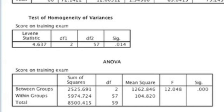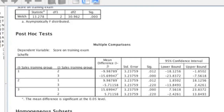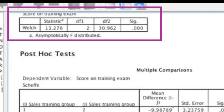Thinking back to the assumption of equality of variance — it was not met, so we need to apply a Welch correction. To find this, just scroll down and you'll find the Welch table. The statistics in this table are what we would report for this one-way ANOVA, because the Welch correction is correcting for the fact that our variances are not equal. Conceptually, applying the Welch correction is the same as looking at the bottom row in an independent samples t-test. If we look at the p-value for the Welch correction, the ANOVA is still significant even when using the Welch correction.